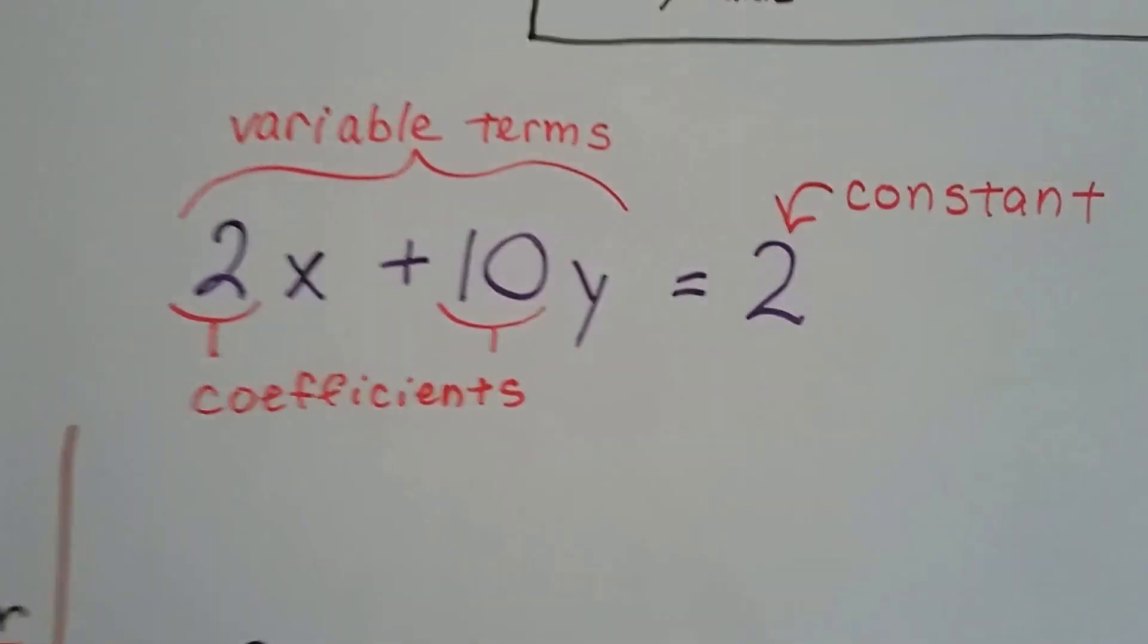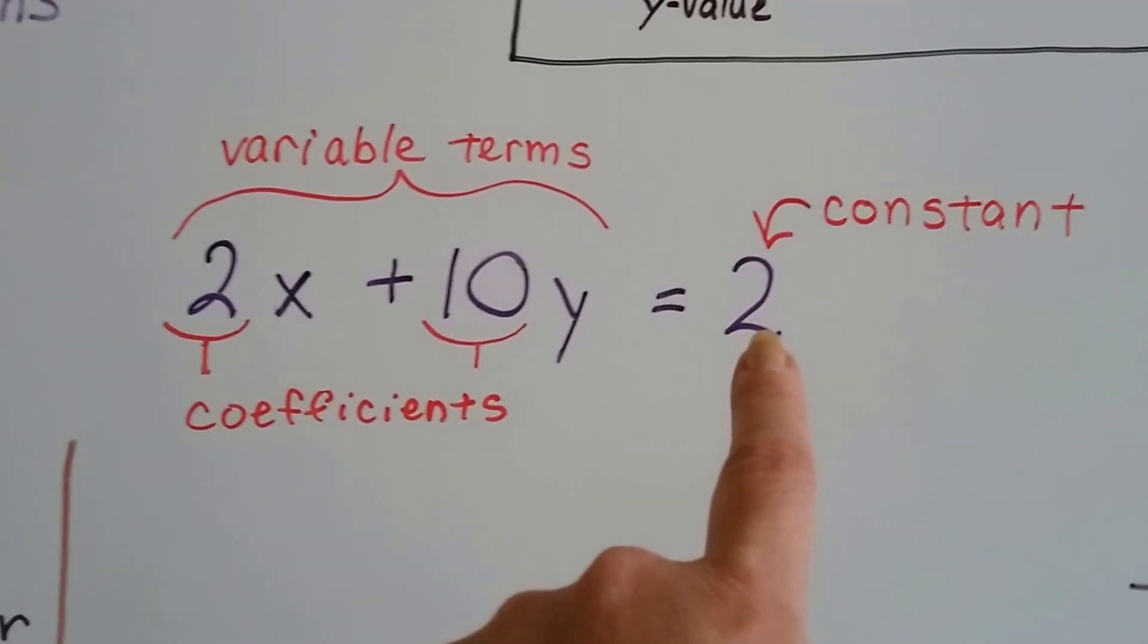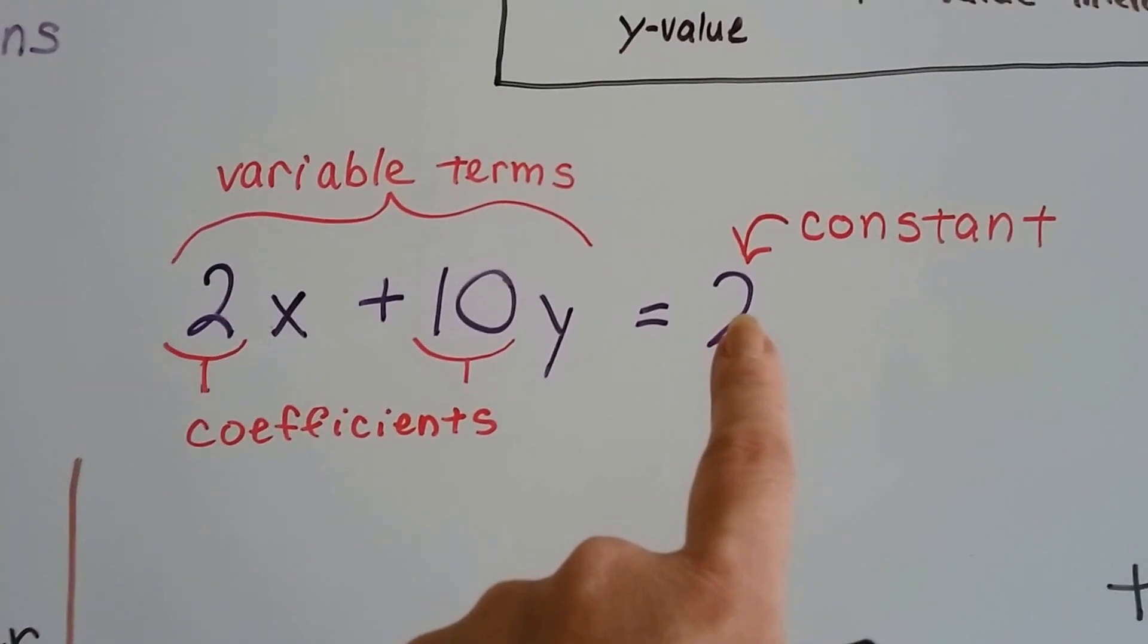So let's do a little review here. That's a constant number. It stays the same, all right?